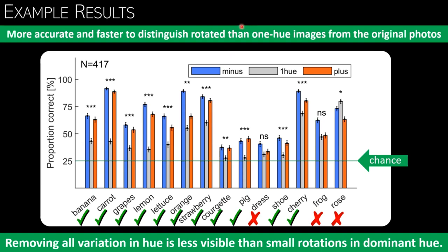Objects where this did not work were either control objects like the frog and the rose that appear to have more than one color, or objects where all conditions were not distinguishable from the original, like here for hashtag the dress, which is all close to chance level.